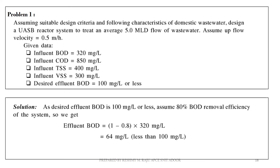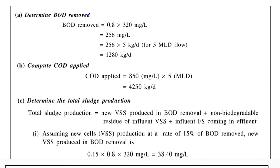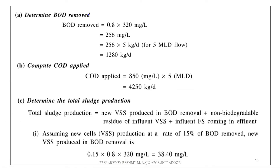Design example: Design a UASB reactor system to treat an average flow of 5 MLD. Assume upflow velocity = 0.5 m/h. Given data: Influent BOD = 320 mg/L, Influent COD = 850 mg/L, TSS = 400 mg/L, VSS = 300 mg/L. Desired effluent BOD ≤ 100 mg/L. Assume 80% BOD removal efficiency, giving effluent BOD = 64 mg/L, which is less than 100 mg/L.